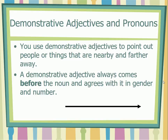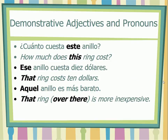A demonstrative adjective always comes before the noun and agrees with it in gender and number. For instance, how much does this ring cost? 'This' would be a demonstrative adjective — just like in English, it comes before the noun. In Spanish, we would ask: ¿Cuánto cuesta este anillo? Este anillo cuesta 10 dólares.